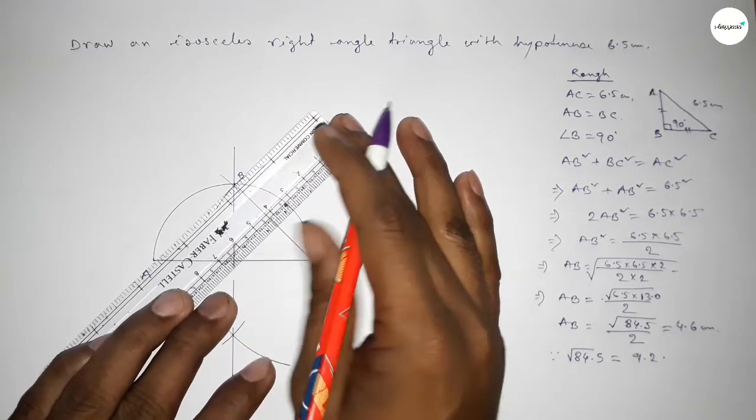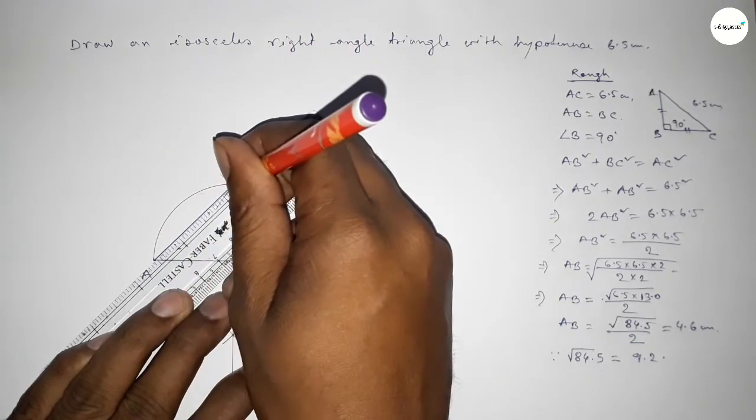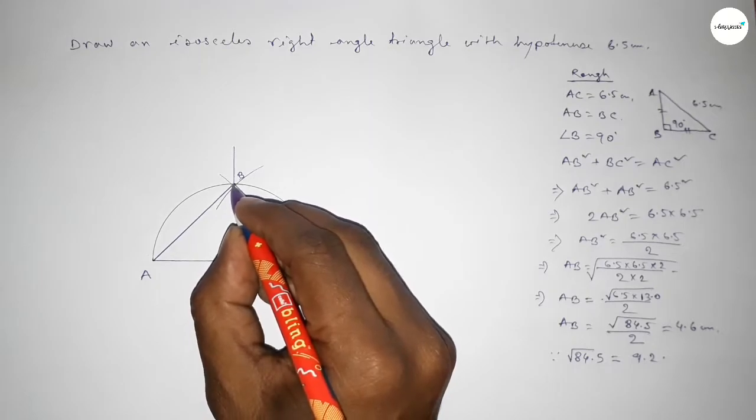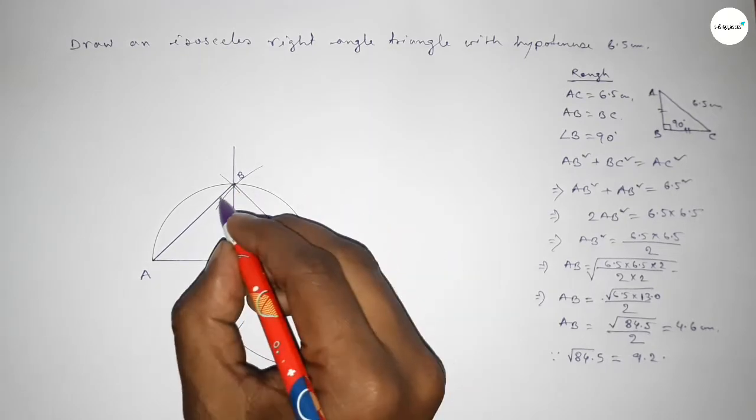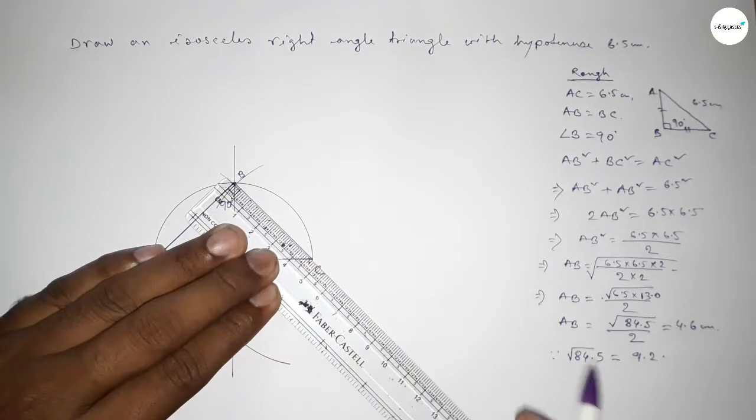Then joining A and B to get the triangle ABC. And angle in a semicircle is always 90 degree, so here 90 degree. Now checking the side BC and AB are equal or not. So putting the scale here...